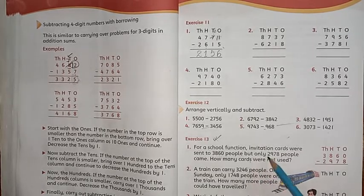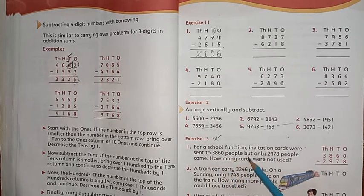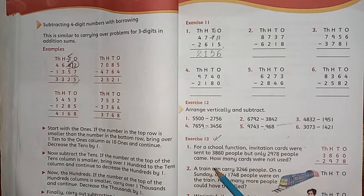Now we do question number 1. For a school function, invitation cards were sent to 3860 people, but only 2978 people came. How many cards were not used?